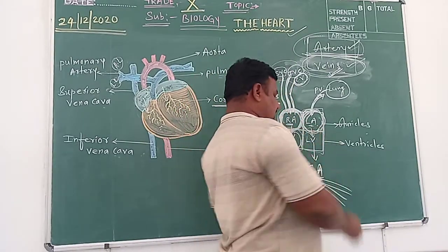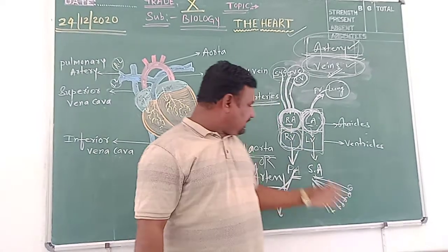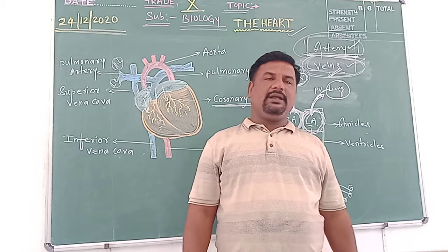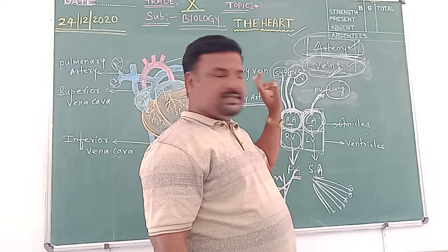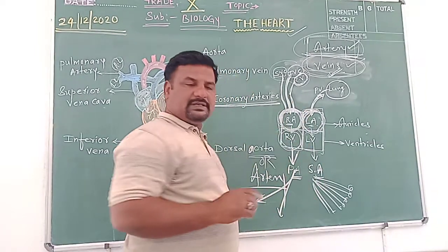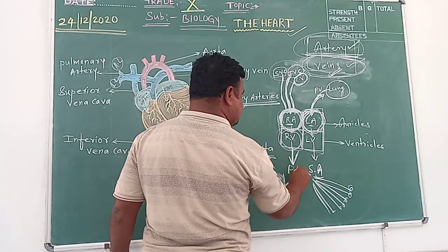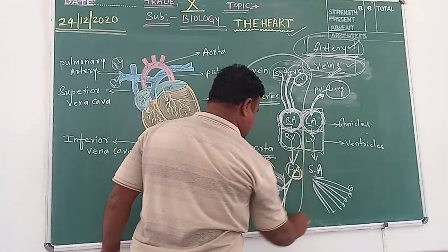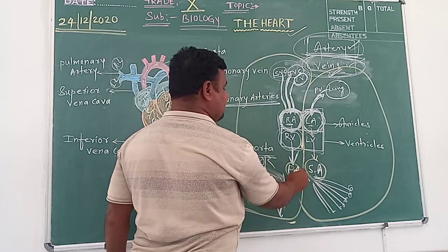The systemic artery opens into the left ventricle and gives many branches connected to different areas of the body, through which the various organs receive oxygenated blood. This cycle is called double circulation. In human beings, there are two circuits: the pulmonary circuit — involving the pulmonary artery — and the systemic circuit.